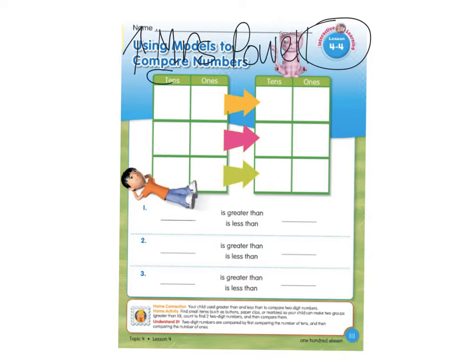Remember we're working on tens and ones. When we're working on tens and ones, we're using that to compare. So if I see 32 comparing to 42, I look at the tens place first. I always look at the tens place first.